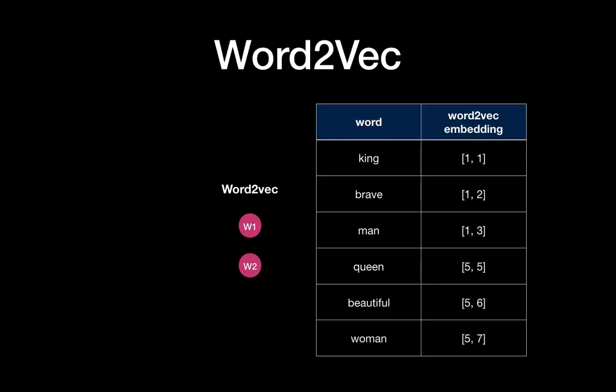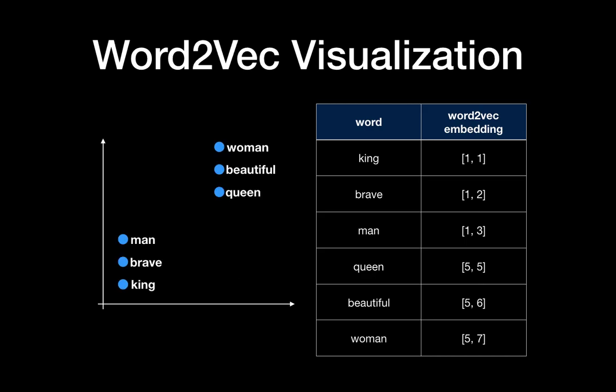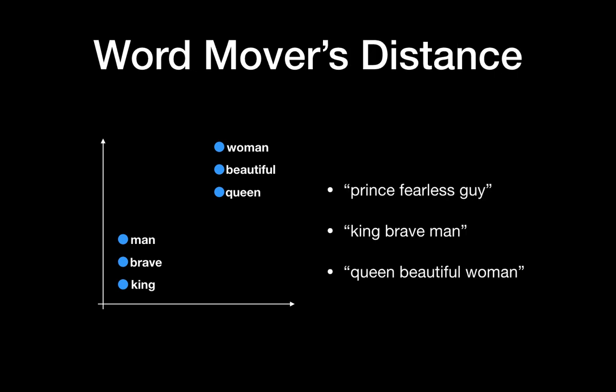Say we have the word2vec like this and we can visualize it like this. You can see that 'man', 'brave', and 'king' are in similar locations, and 'woman', 'beautiful', and 'queen' are in similar locations. You can also do some fun calculation: king minus man plus woman equals queen. The math here shows 1,1 minus 1,3 plus 5,7 equals 5,5. This is fun. We are going to use this word2vec for WMD from now on.